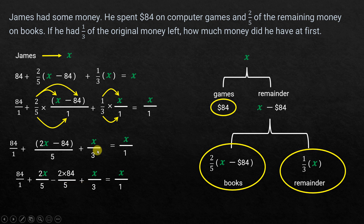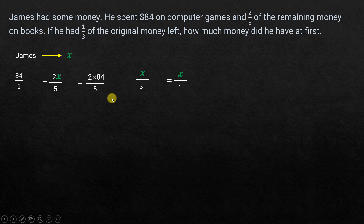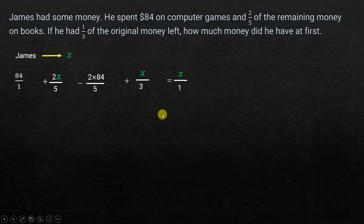Now all these fractions need a common denominator. The denominators are 1, 5, and 3, so we find the LCM of 1, 5, and 3, which is 15. We are going to make all denominators 15.